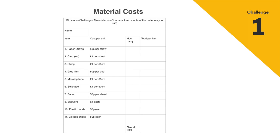Skewers are £1 each. Elastic bands are 50p each and lollipop sticks are 50p each. If there are any other materials around the home that you might want to use, just liken those materials to the ones on this sheet and use those costs.